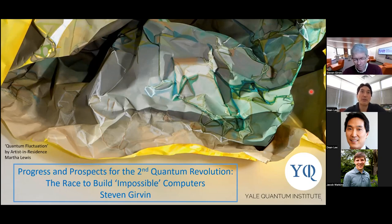Professor Girvin earned his PhD in theoretical physics from Princeton University. He joined the Yale faculty in 2001, where he is Eugene Higgins Professor of Physics and Professor of Applied Physics. From 2007 to 2017, he served as Yale's Deputy Provost for Research.